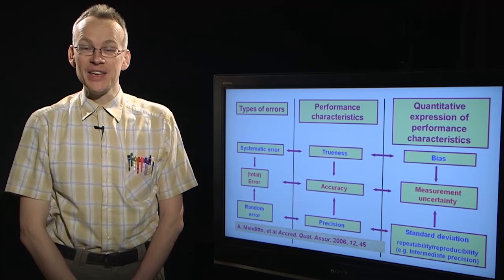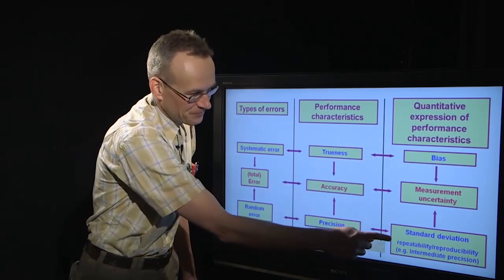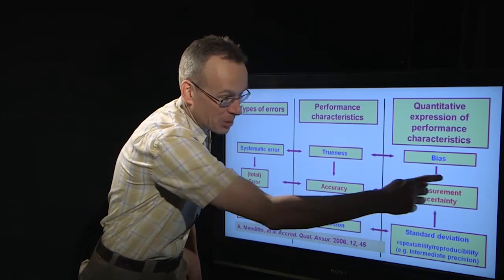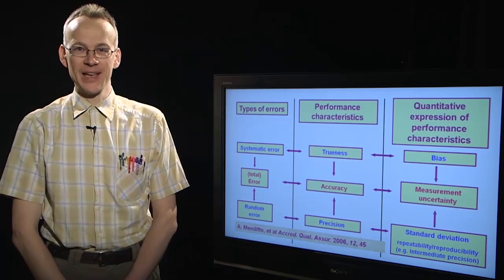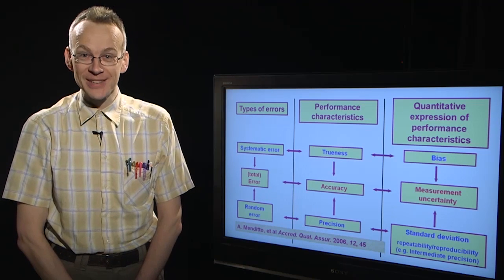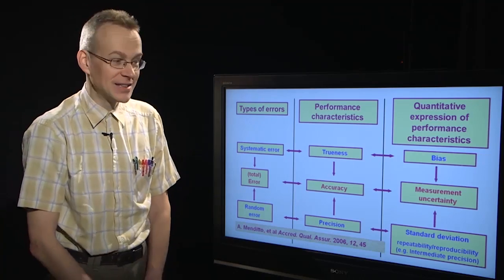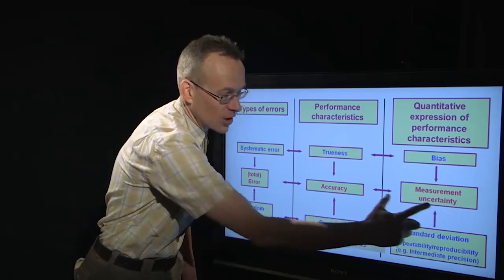If precision by standard deviation and trueness by bias have been estimated in a reasonable way, and if they are cleverly combined in a suitable way, it is possible to estimate the measurement uncertainty. Measurement uncertainty can be called the quantitative estimate of accuracy.